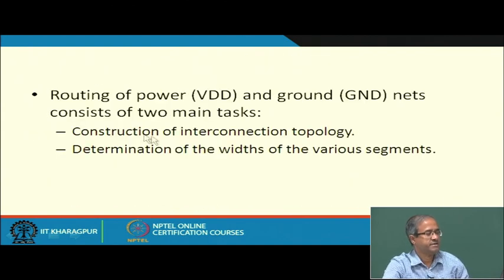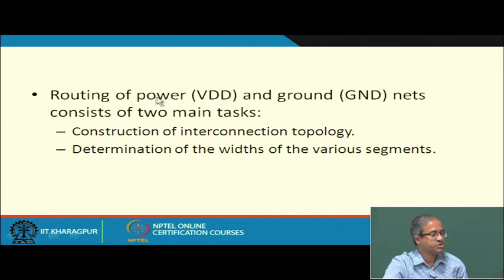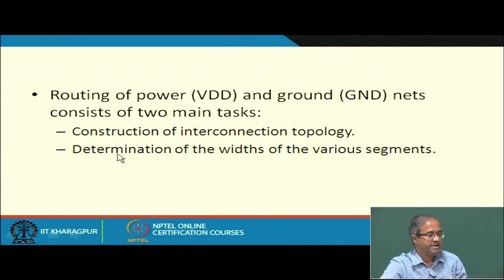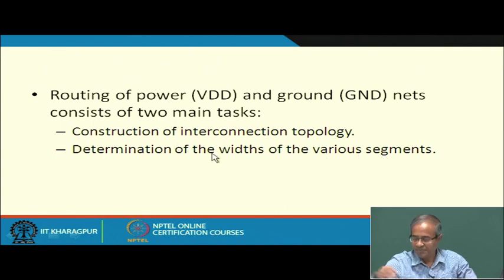Just like clock routing, VDD and power routing also require two steps. For clock, the two steps were: first designing a clock tree, then distributing it to the actual terminals. For power and ground routing the first step is similar — construct a topology that connects to all points needing power. The second step is determining appropriate widths of wire segments based on current requirements of the blocks being driven.